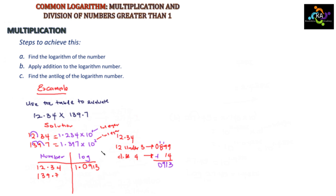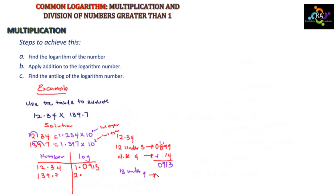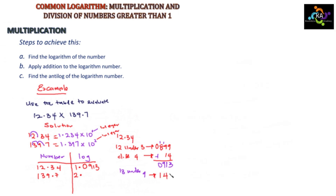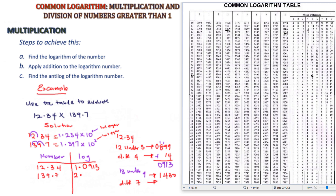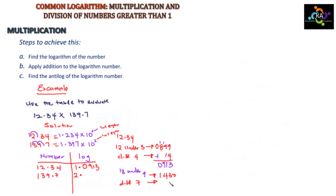The integers are very important. For 139.7, look up 13 under column 9 in the log table — that gives 1430. The difference for 7 is 23. Adding 23 to 1430 gives 1453. The integer is 2, so the log of 139.7 is 2.1453.